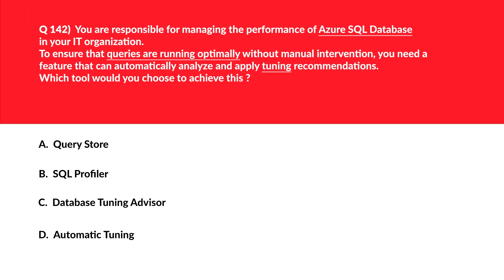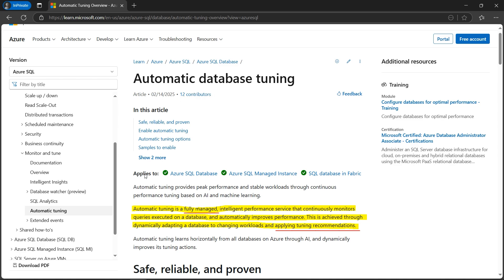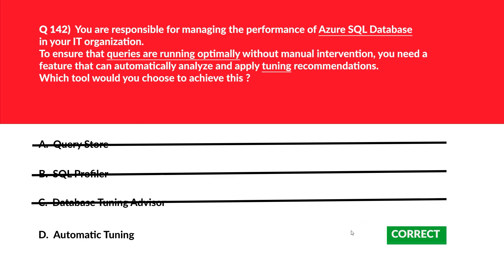Let's tackle a question about queries that need to run optimally and about performance tuning in Azure SQL Database. Options A (Query Store), B (SQL Profiler), and C (Database Tuning Advisor) cannot automatically tune the database, which is the primary requirement of the question. According to the official documentation, automatic tuning is a fully managed intelligent performance service that continuously monitors queries executed on a database and automatically improves performance. It achieves this by dynamically adapting a database to changing workloads and applying tuning recommendations. We'll lock option D, automatic tuning, as the right choice.